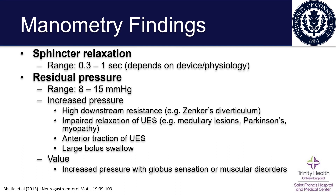Other manometric findings include sphincter relaxation, with a range of 0.3 to 1 seconds, and that depends on the device utilized and the patient's physiology. The residual pressure, which ranges between 8 and 15 millimeters of mercury, has some potential utility.